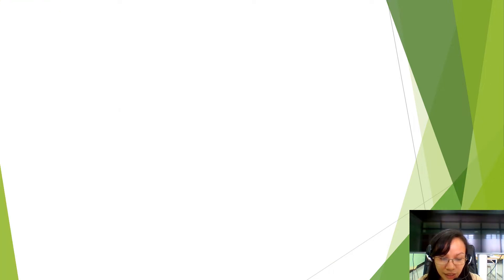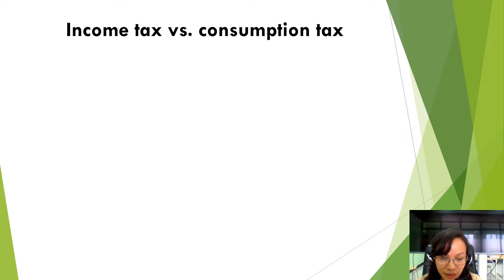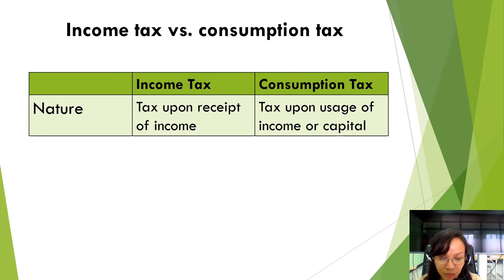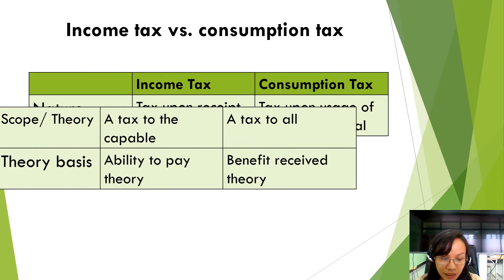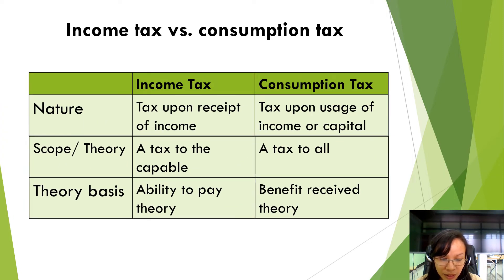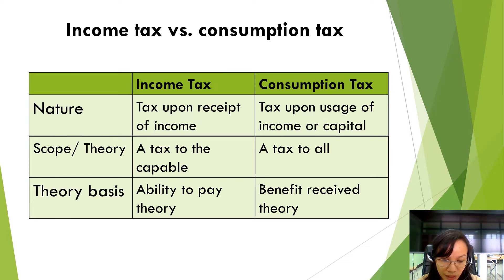Now let's differentiate income tax and consumption tax. The nature of income tax is a tax upon receipt of income — for example, compensation and salary received — while consumption tax is a tax upon usage of income or capital; the spending. In scope, income tax is a tax to the capable, while consumption tax is a tax to all. The theory basis of income tax is the ability-to-pay theory — as a professional, I have the ability to earn income by providing professional service and in return they pay me. While consumption tax is based on the benefit-received theory, which was already discussed.